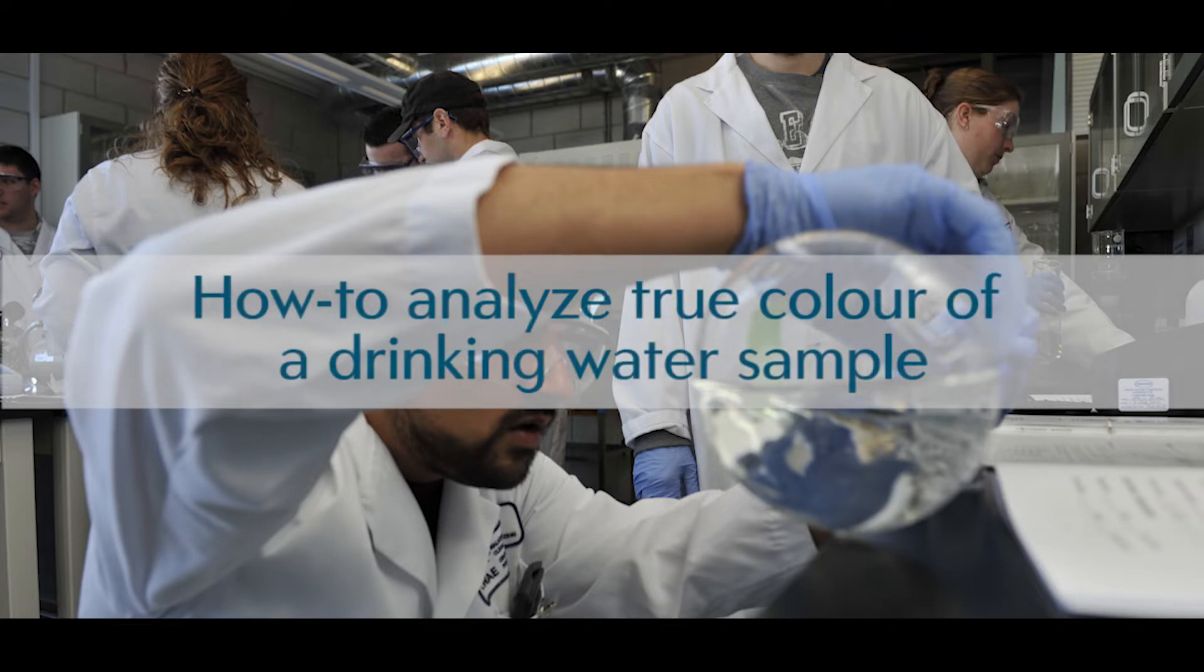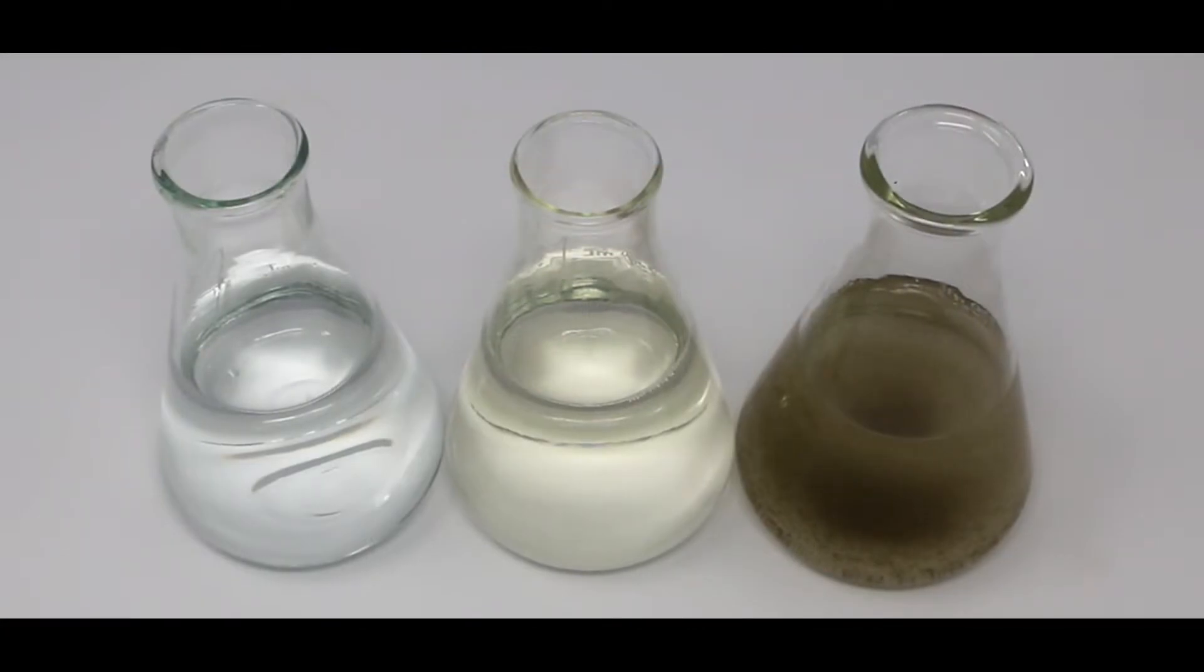The decay of vegetation creates organic materials that can give a yellow or brown color to water. Color can also result from the presence of iron and manganese.